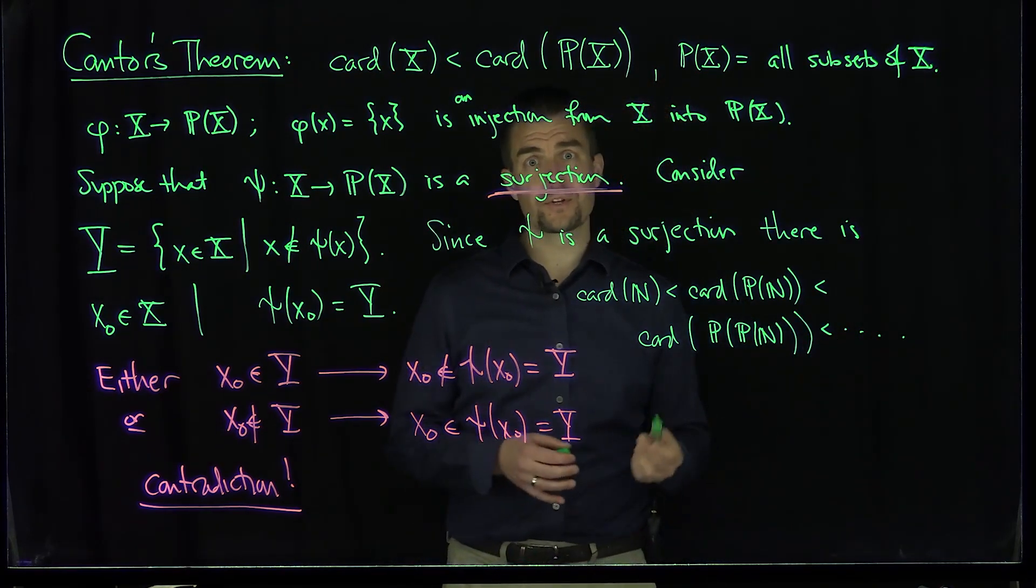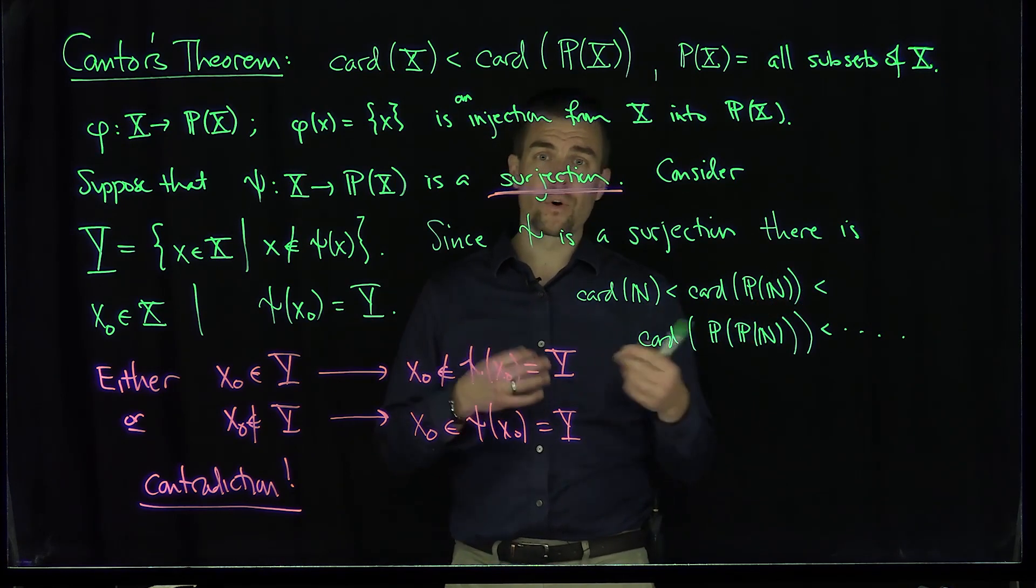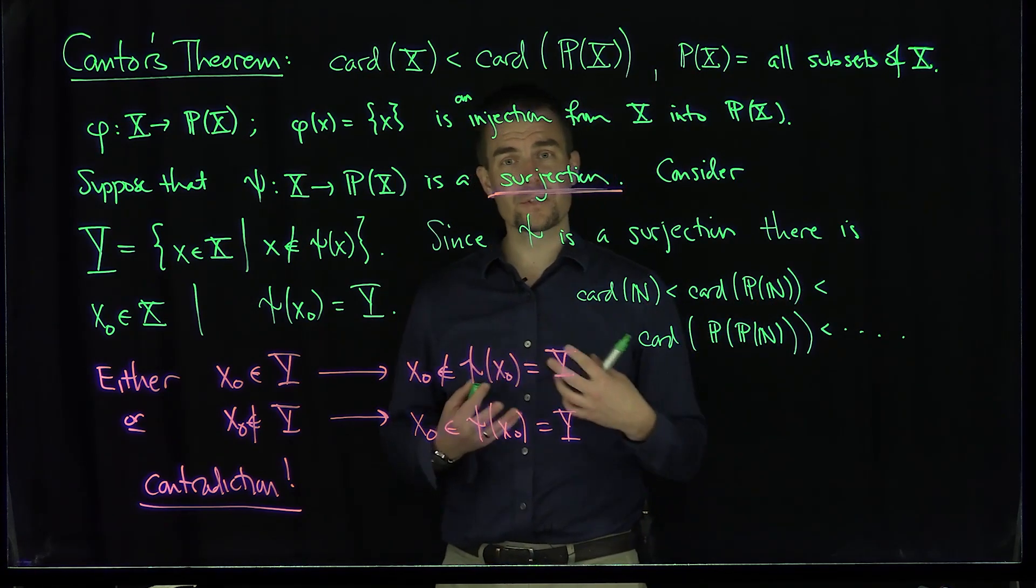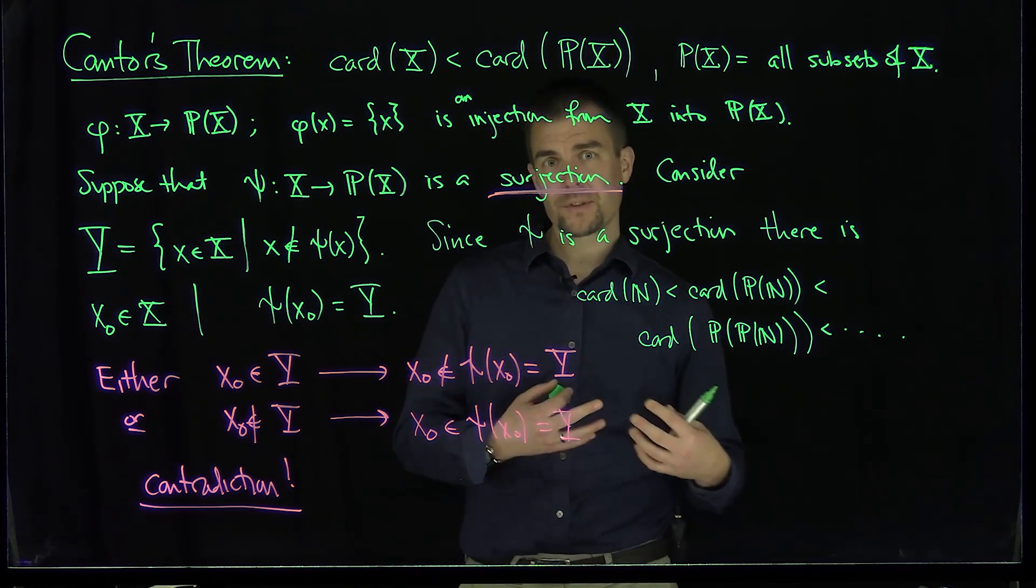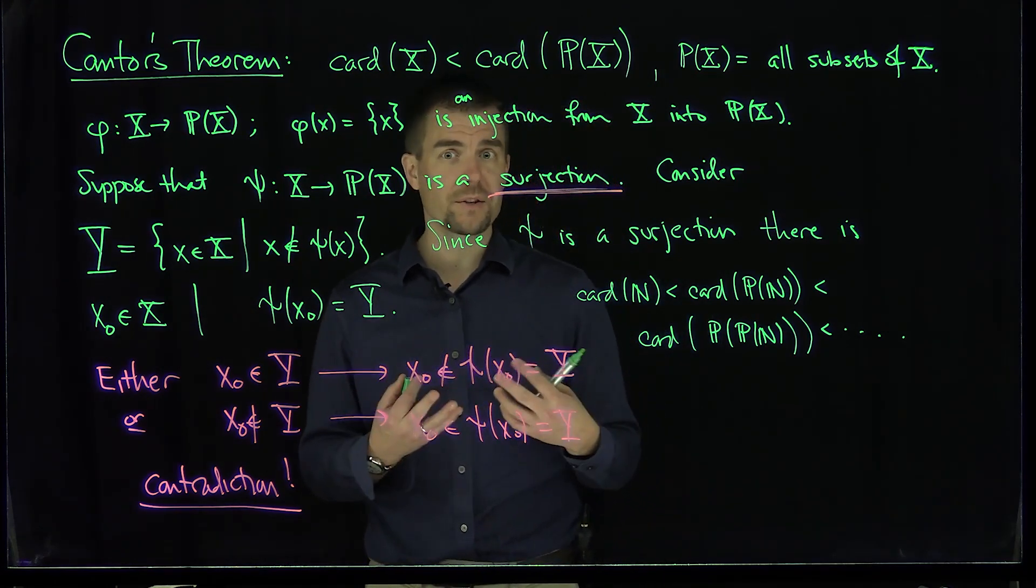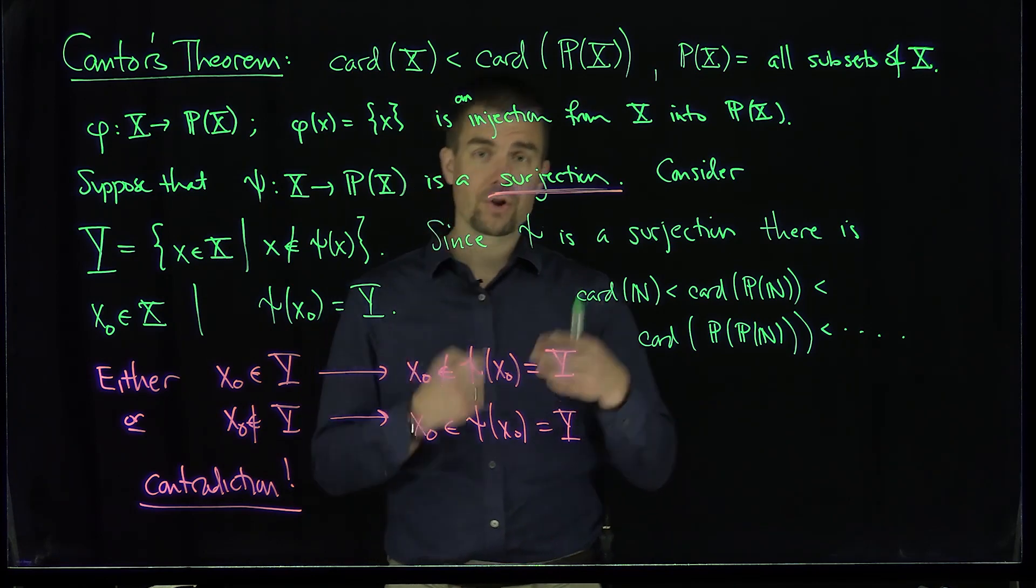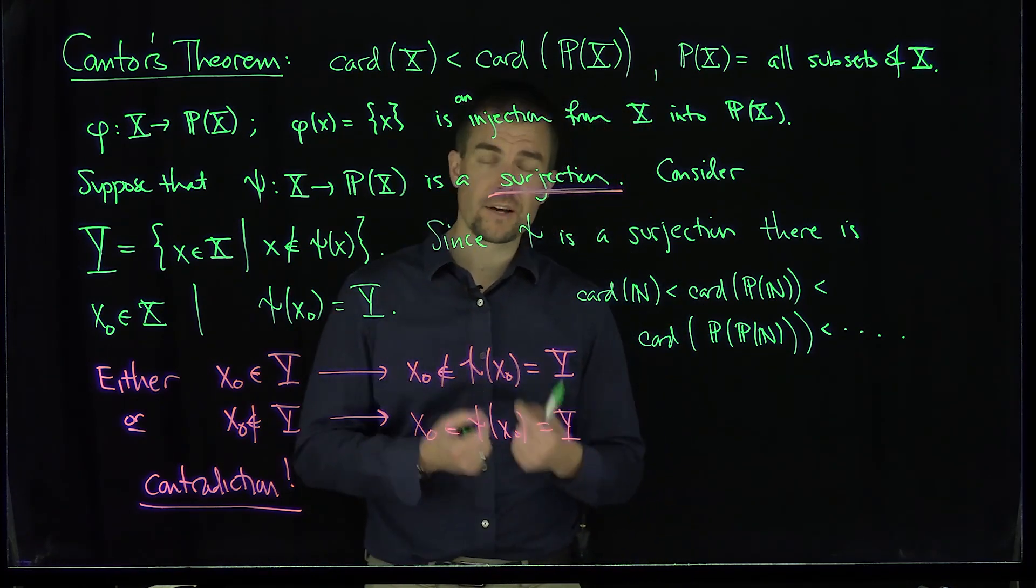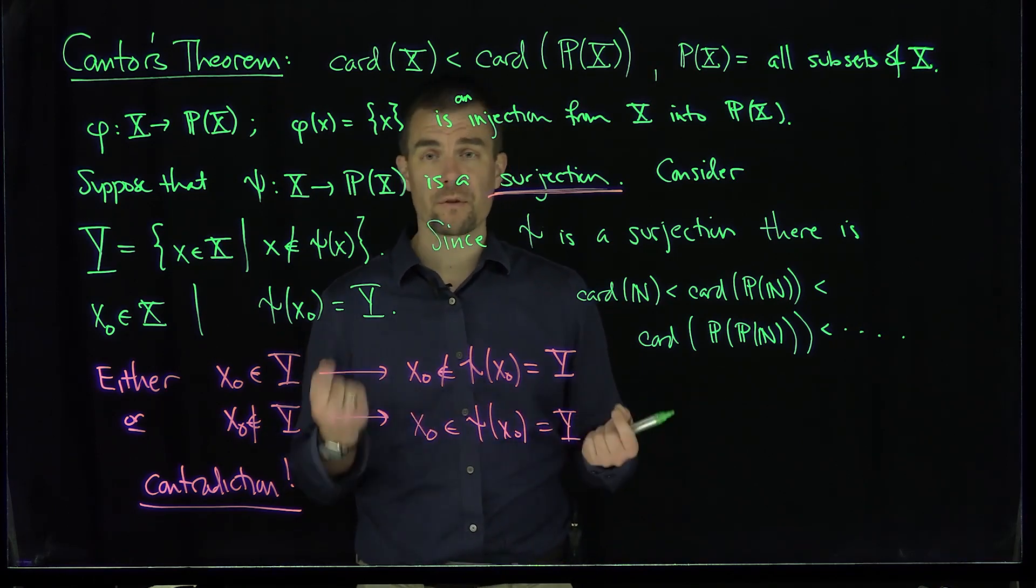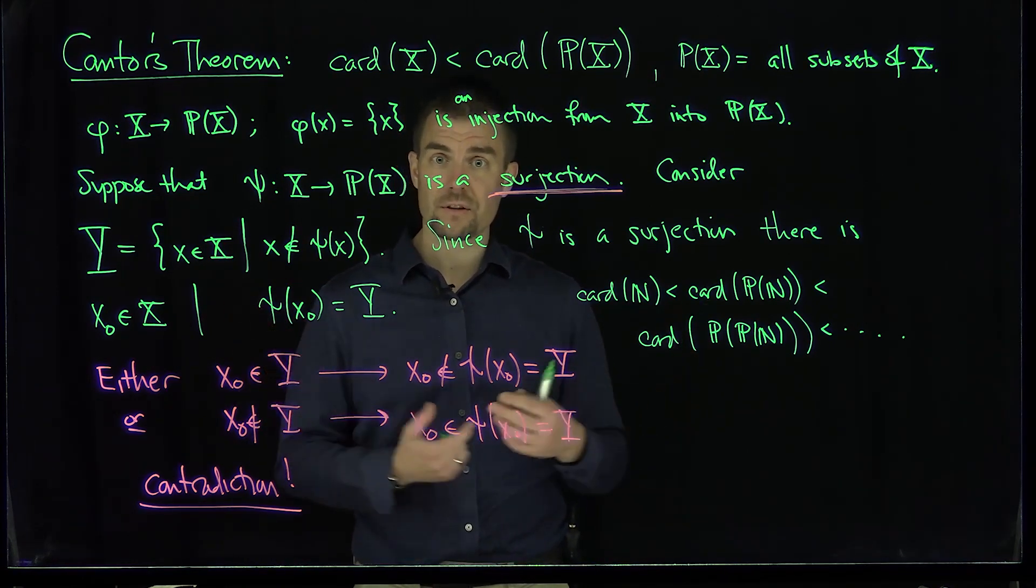So what this shows is that there's not really a largest infinity, whereas there is in some sense a notion of a smallest infinity because every subset of a countable set that's infinite is also countable. So in some sense, countable gives us a notion of smallest infinity, but there is no notion of largest infinity because if you have a set which you claim has the largest cardinality, the power set of that set will always have a larger cardinality than that. So there is no largest infinity.